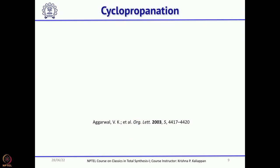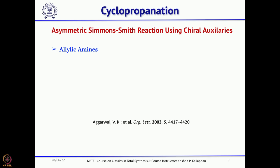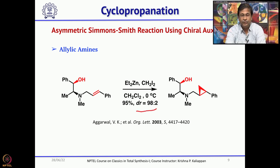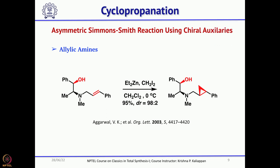Varindra Agarwal in 2003 reported another asymmetric Simmons-Smith cyclopropanation using an ephedrine-type amino alcohol. This also gives very good diastereomeric ratio of 98:2, following a similar pattern. In both these cases, a chiral auxiliary is needed — you attach the allylic group and then perform the cyclopropanation.